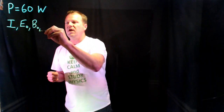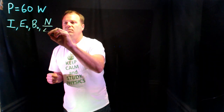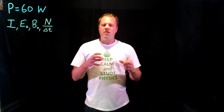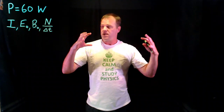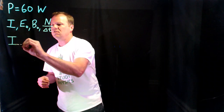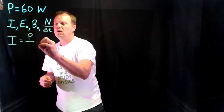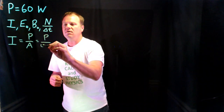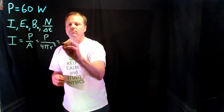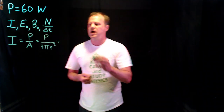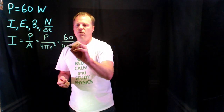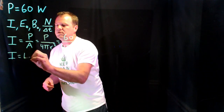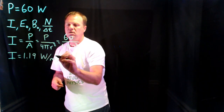To determine the intensity at a distance of 2 meters, I'm going to assume that the light is radiating outward in all directions equally. With that, I can use the definition of intensity: power over area. If it's radiating equally in all directions, that area becomes the area of a sphere — 4πr². Plugging in the numbers with r = 2 meters, the intensity will be 1.19 watts per square meter.